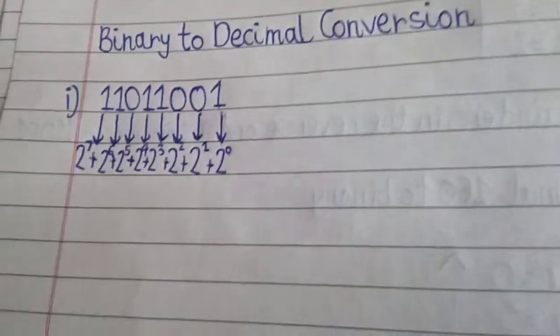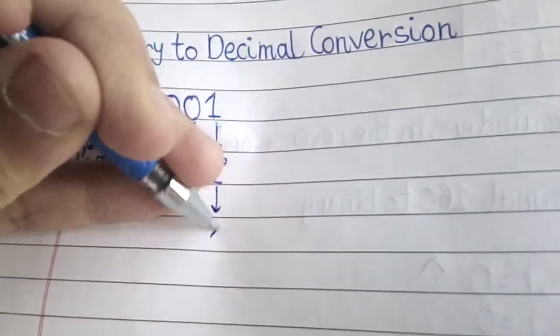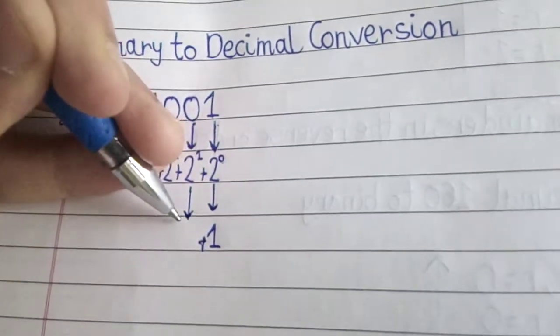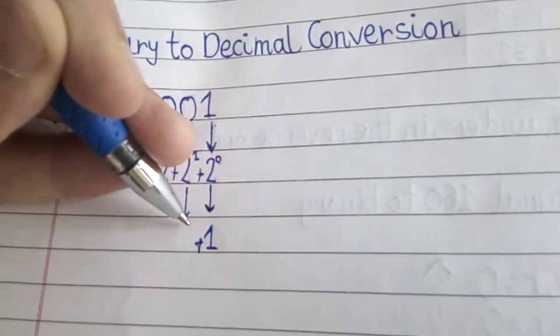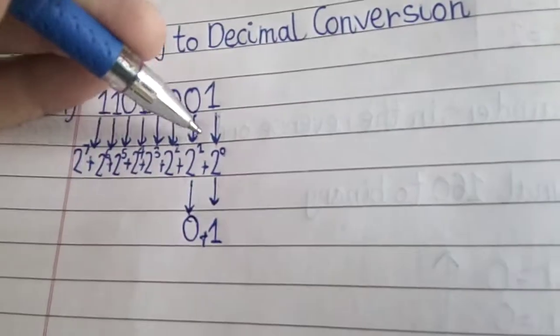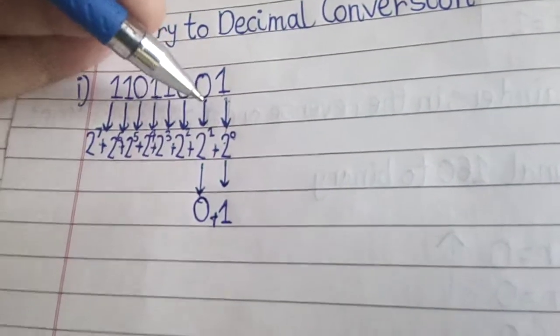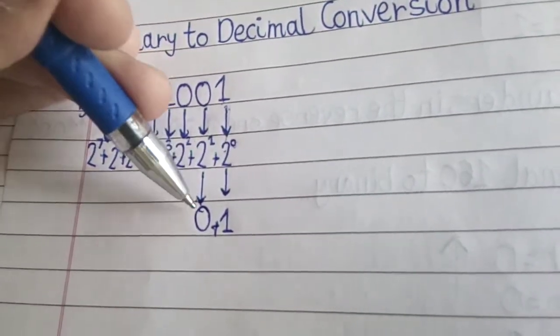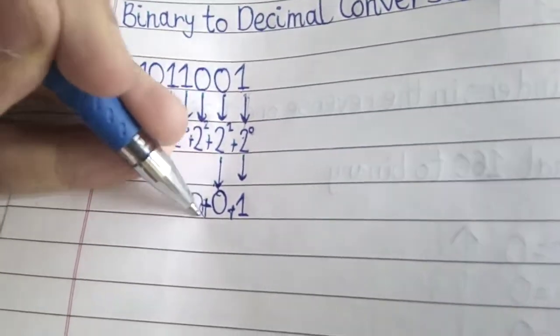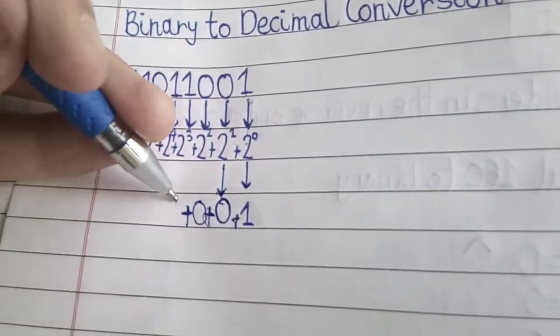Then we need to add these bits. So first we get this as 1. We are multiplying like this, but we have to add. So 1 into 2 raise to 0 is 1. 0 into 2 raise to 1 is 0. Plus, 2 square into 0 is 0. Plus, 2 cube into 1 is 8.